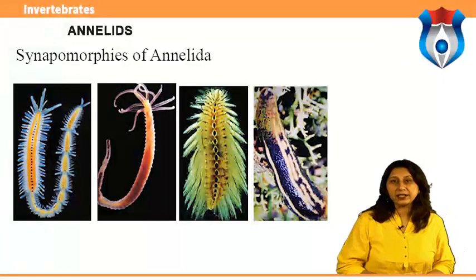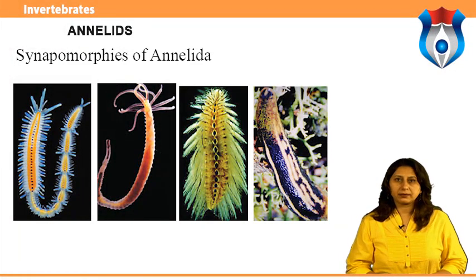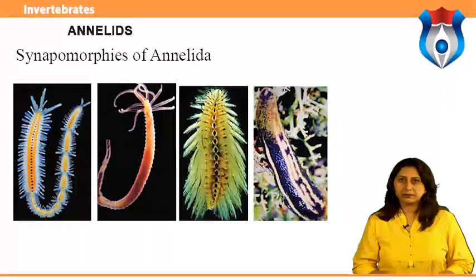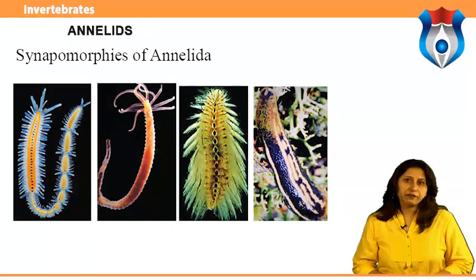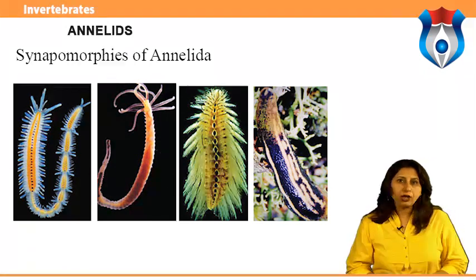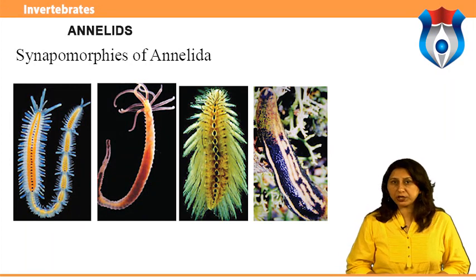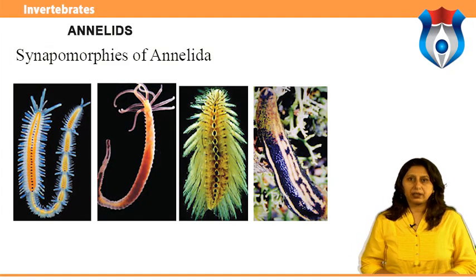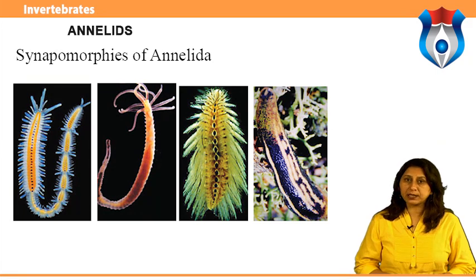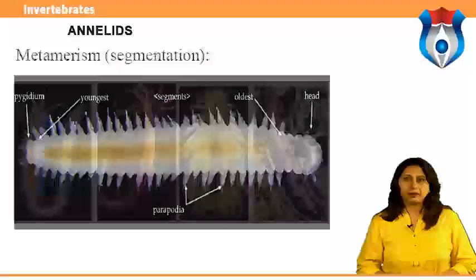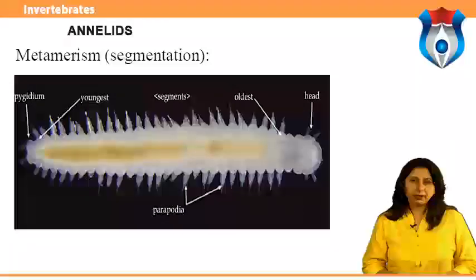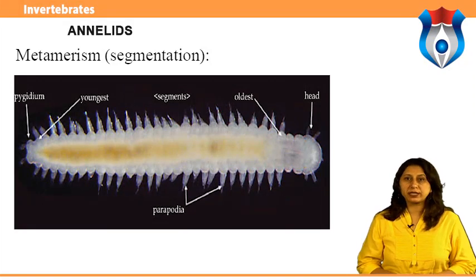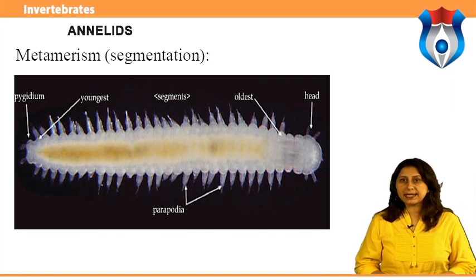Let us look at the characteristics of annelids. The monophyly of Annelida is not well supported and only two morphological features are worthy of discussion: segmentation and chaetae. Nuchal organs represent another possible apomorphy. Metamerism — segmentation: annelids have three body regions. The majority of the body is comprised of repeated units called segments.